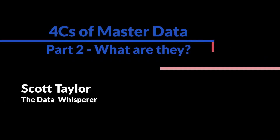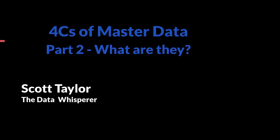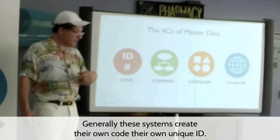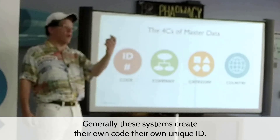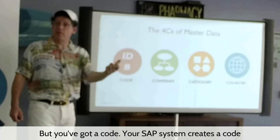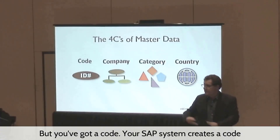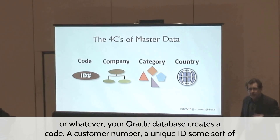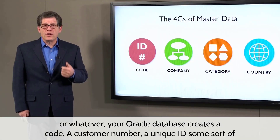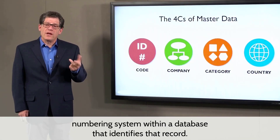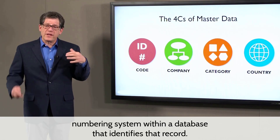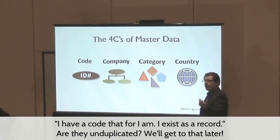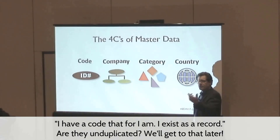Code, company, category, and country. Every record has a code, some sort of unique identifier. Generally these systems create their own code, their own unique ID. Your SAP system creates a code, or whatever your Oracle database creates a code — a customer number, a unique ID, some sort of numbering system within a database that identifies that record. I have a code therefore I am; I exist as a record.